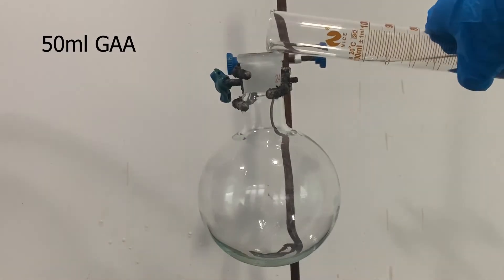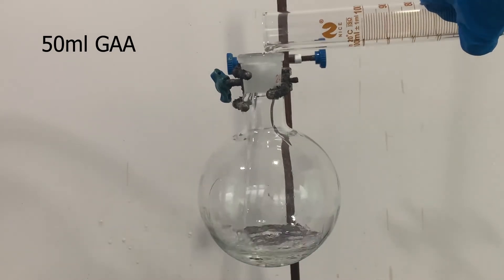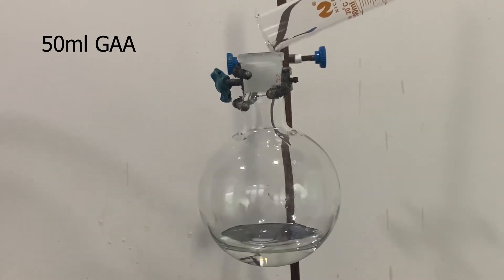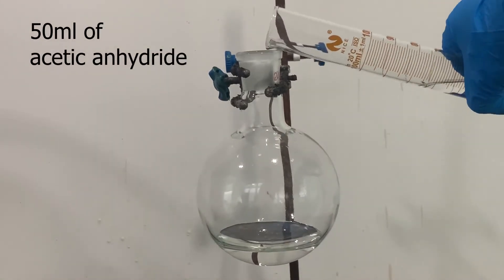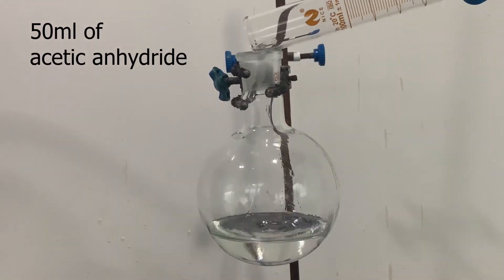To get started, I added 50 ml of glacial acetic acid to a 500 ml round bottom flask. It is then followed by 50 ml of acetic anhydride.